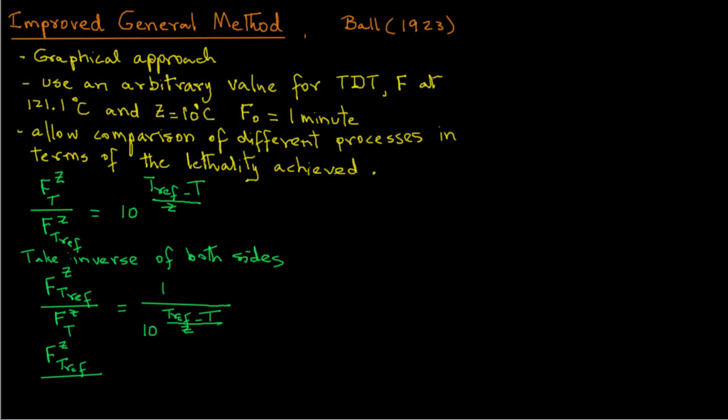And so we have F^Z with Tref divided by F^Z_T equals, and if we take the quantity from the denominator to the numerator, we will have to multiply the power with a negative sign. And so we can write the right hand side as 10 raised to the power T minus Tref over Z. Note that we have absorbed the negative sign by switching the terms.